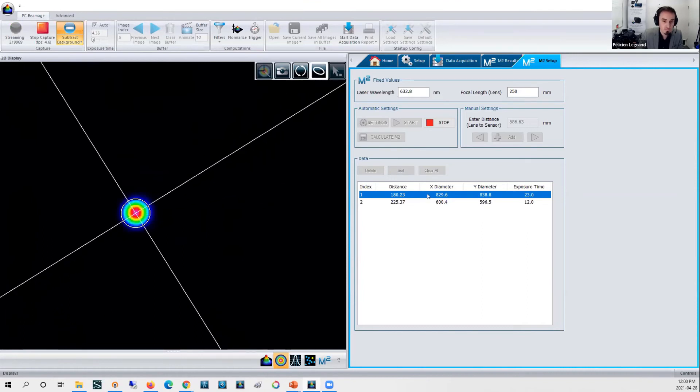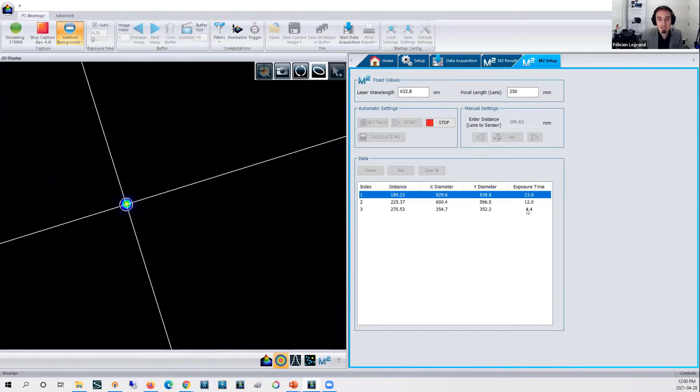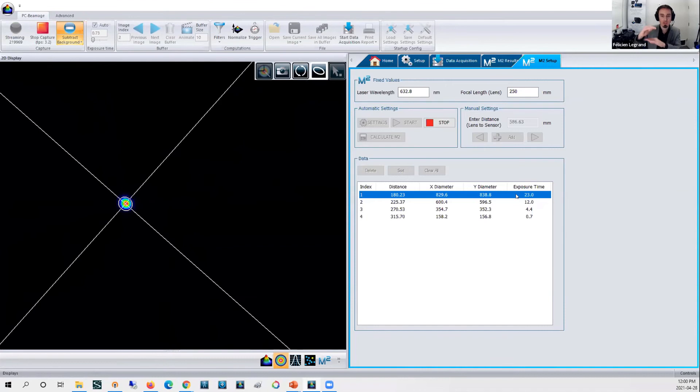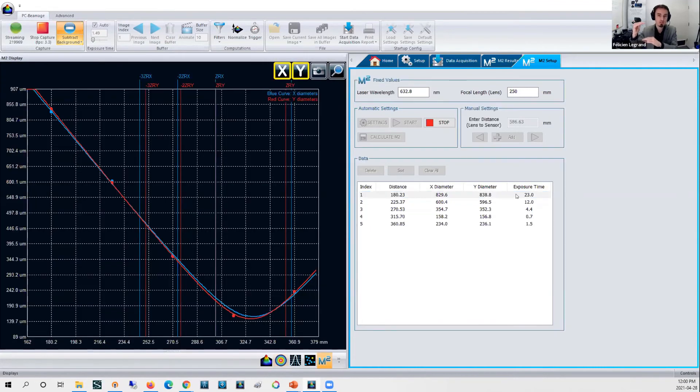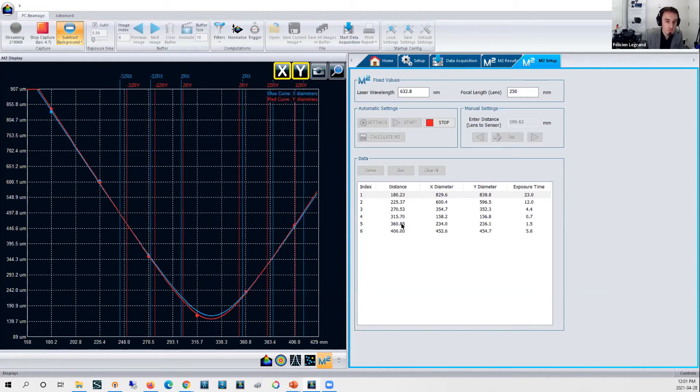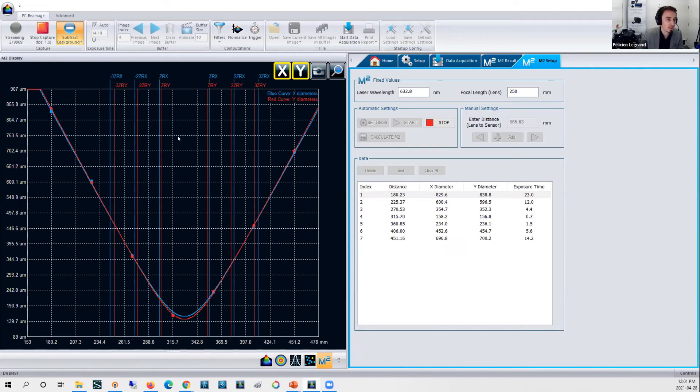That's automatically set, exposure time required to get 85% of the saturation level of the camera. Why 85%? That's to have a good signal-to-noise ratio. Exposure time is set automatically to get to 85% of saturation level, good signal-to-noise ratio and avoid saturation. So as soon as I have five points of measurement along my propagation axis, the software is starting to run the hyperbolic fit within the points of measurement.